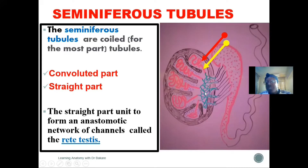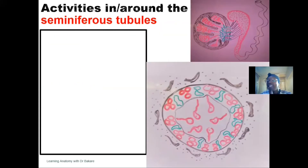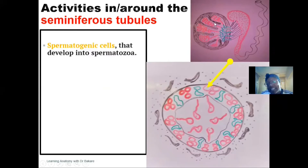The sperm produced within the convoluted region travels down to the straightened region, and is then emptied into a network of tubules called the rete testis. The rete testis is like a continuation of the straight part of the seminiferous tubules.